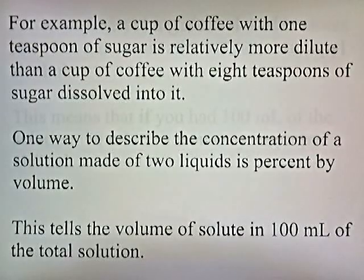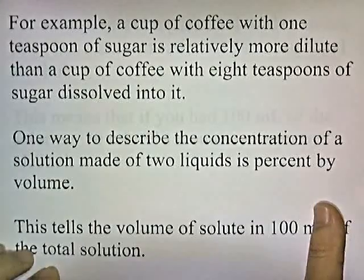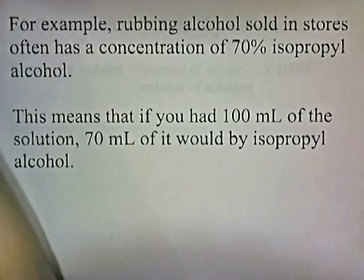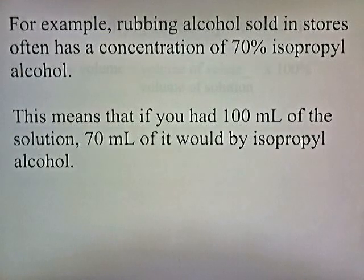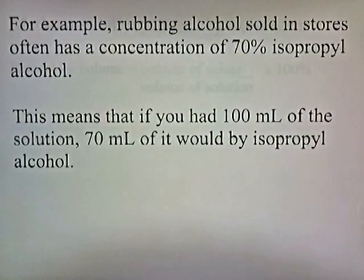One way to describe the concentration of a solution made of two liquids is percent by volume. This tells the volume of solute in 100 milliliters of the total solution. For example, rubbing alcohol sold in stores often has a concentration of 70% isopropyl alcohol. This means that if you had 100 milliliters of the solution, 70 milliliters of it would be isopropyl alcohol, and the rest would be water.